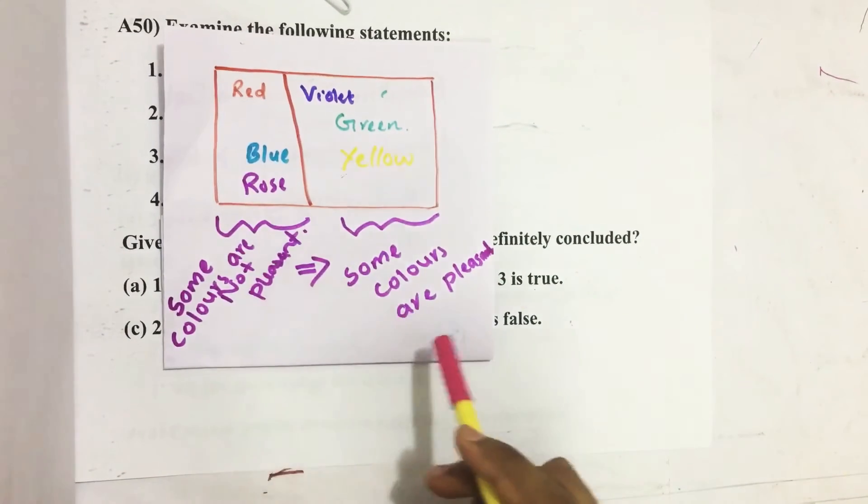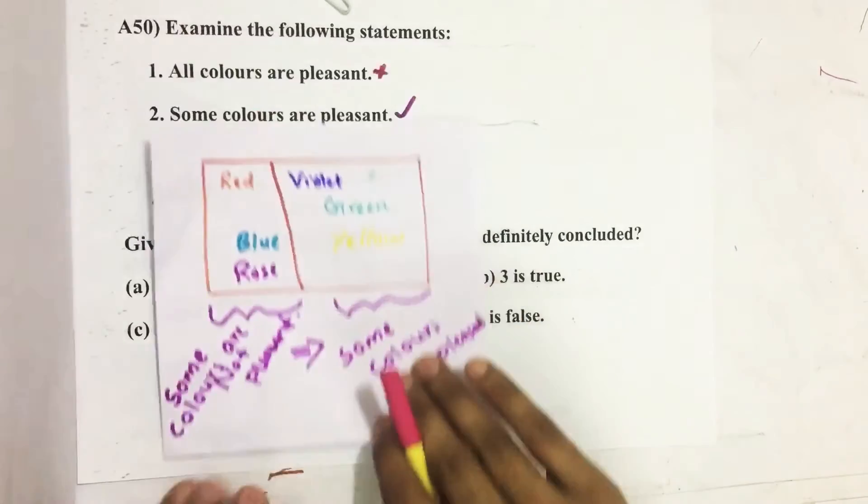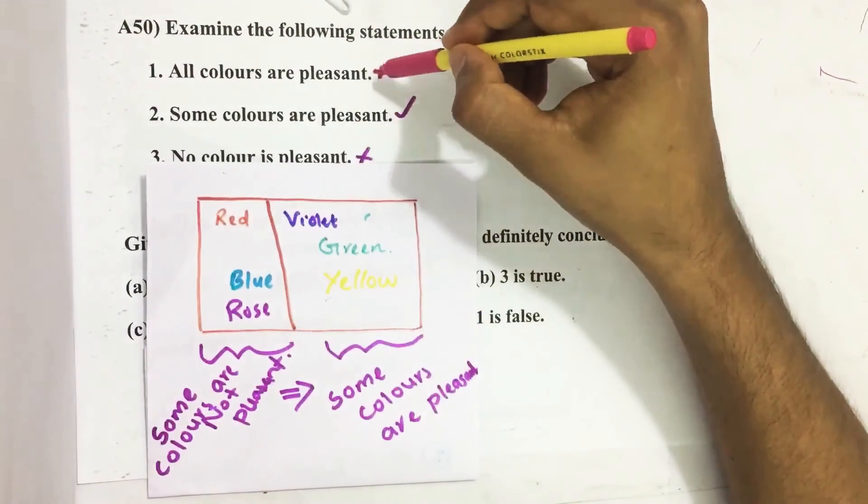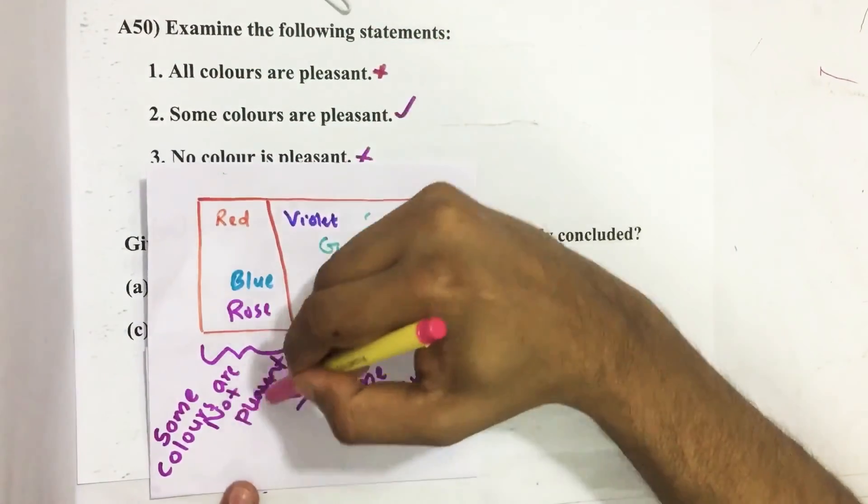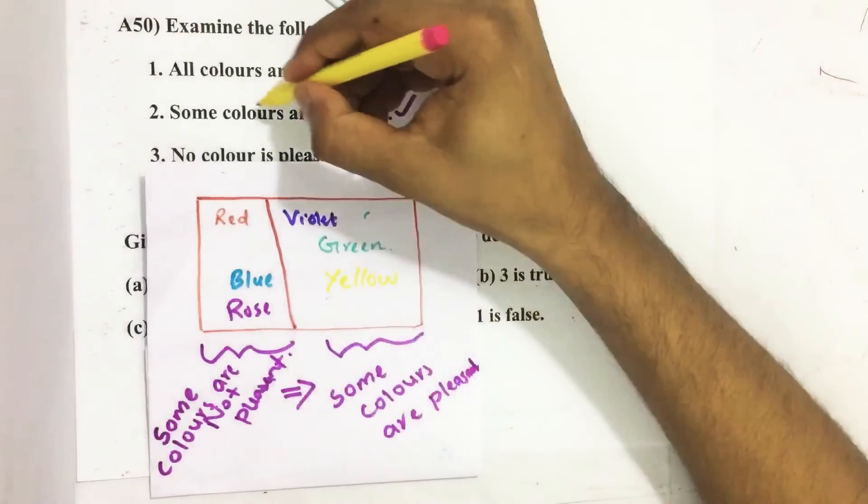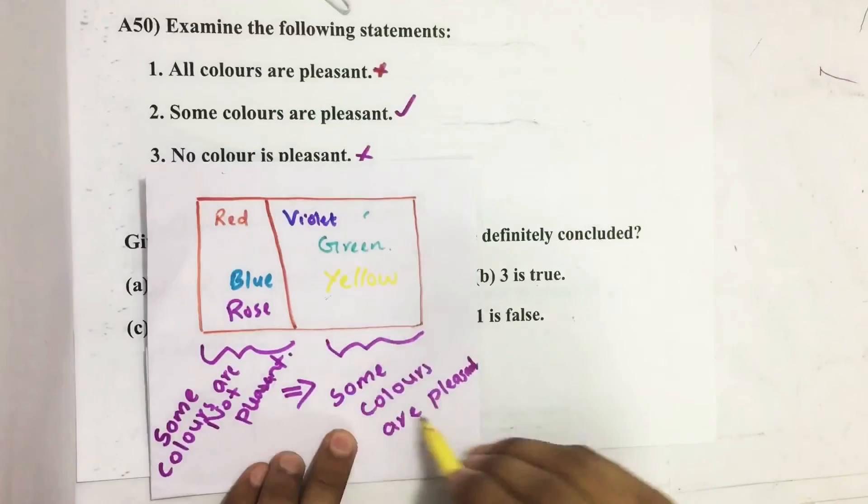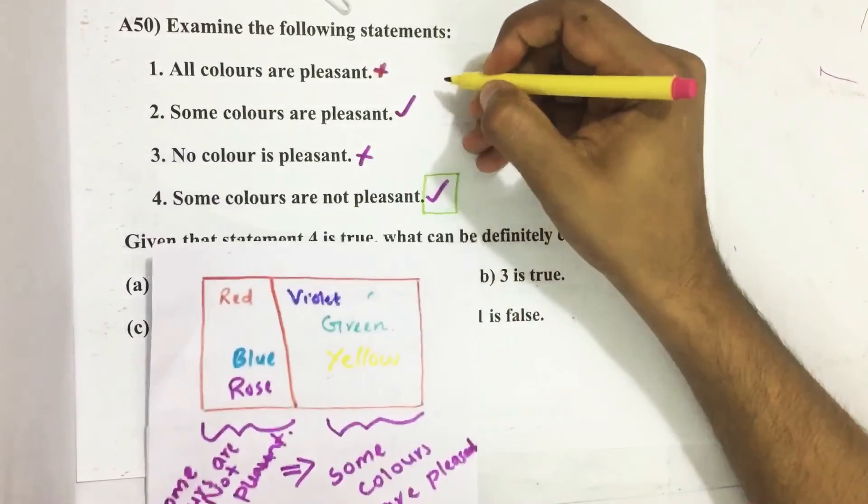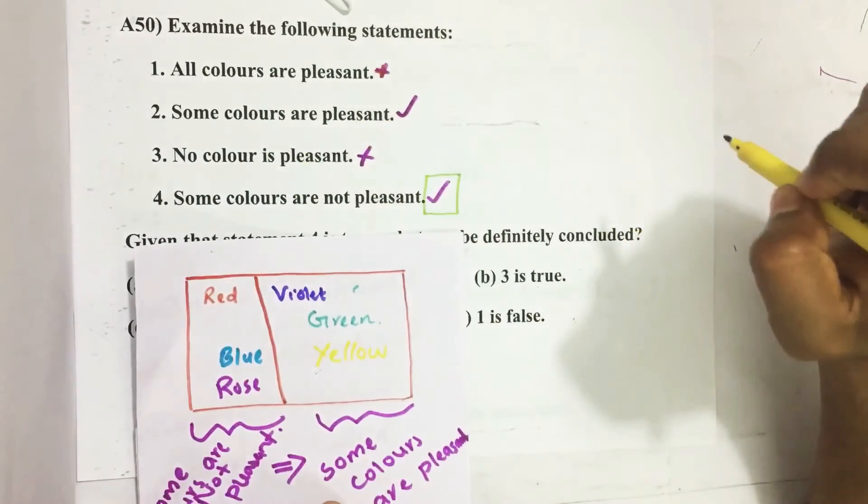Now let us see: All colors are pleasant? No, some colors are not pleasant, so this statement is wrong. Some colors are pleasant? Yes, some colors are pleasant, this is true. No color is pleasant? Some colors are pleasant, so this is also wrong.